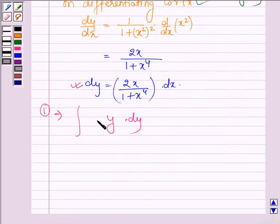So we have to find integral y into dy and this is equal to y square divided by 2 plus a constant c.